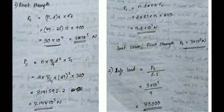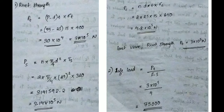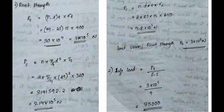Next is crushing. The equation is Pc = N × d × t × σc. Here N = 2, d = 25, t = 15, σc = 640. The value is 4.8 × 10⁵ N. For the safe load, take the least value divided by the factor of safety: 3 × 10⁵ ÷ 4 = 75,000 N.